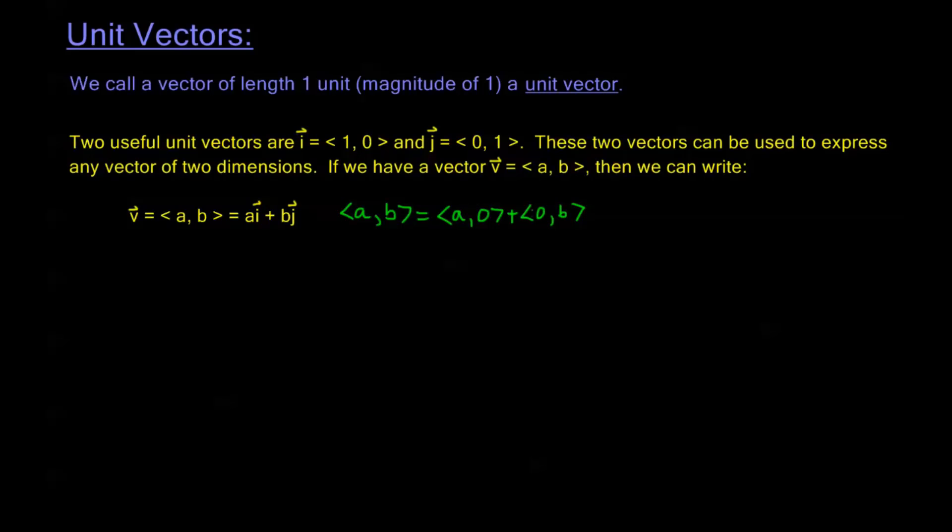If I add these two vectors together I get a plus 0 for my horizontal component and 0 plus b for my vertical component. So this sum is equal to <a,b>. From scalar multiplication we know this is also equal to A times the vector <1,0> plus B times the vector <0,1>.